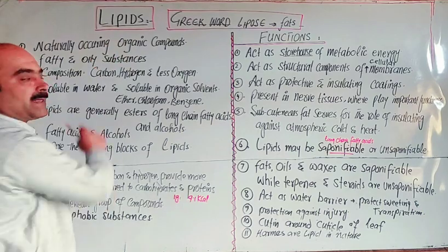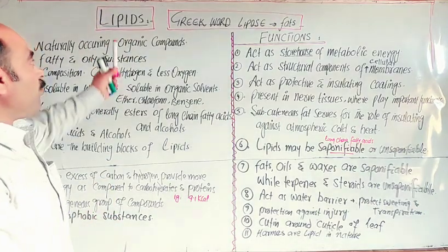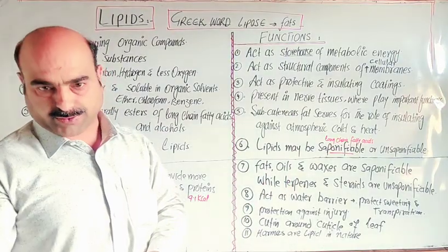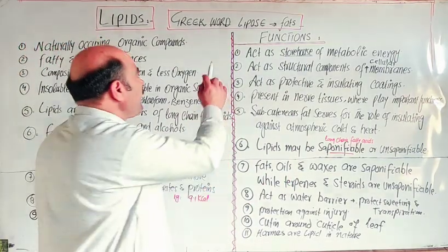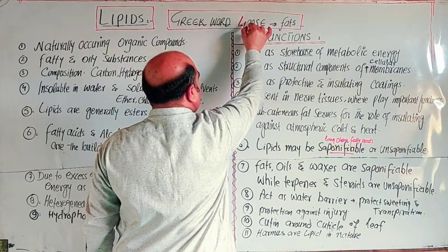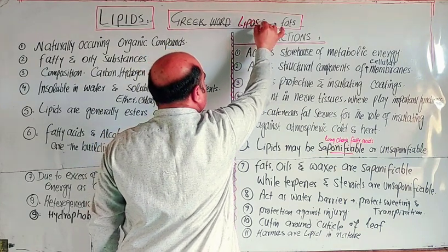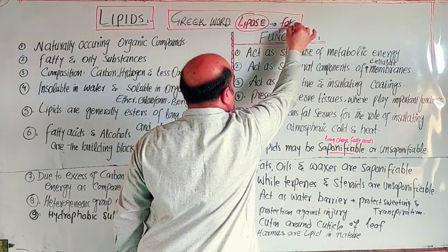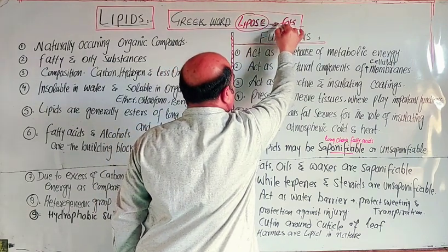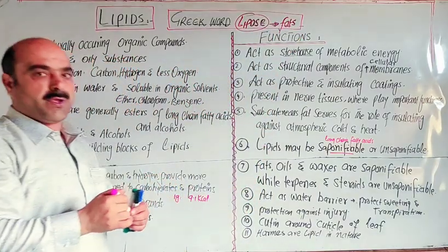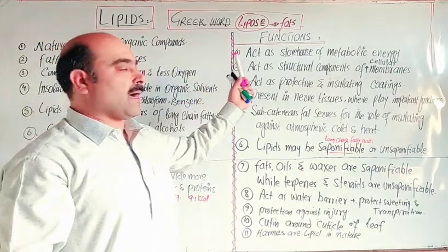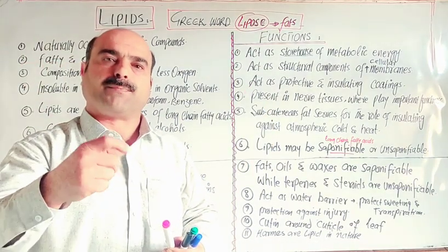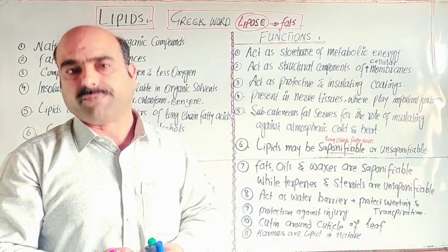The word lipid is derived from a Greek word. The Greek word is 'lipos' — lyphos — which means fat. So the Greek word lipos means fat.